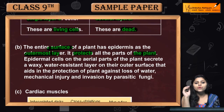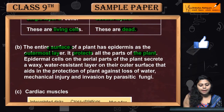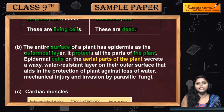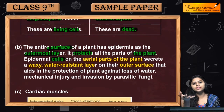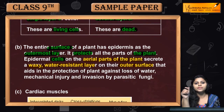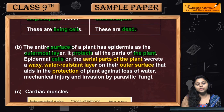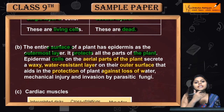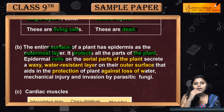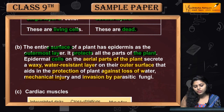Epidermal cells block the entry of any harmful substance. Epidermal cells in the aerial parts of the plant secrete a waxy, water-resistant layer on the outer surface — this is the cuticle. You may have seen leaves with a thick, transparent cuticle layer where water stays on top. This cuticle protects the plant against loss of water, as seen in cactus plants, preventing excess evaporation. The epidermal layer also protects against mechanical injury and invasion of parasitic fungi.